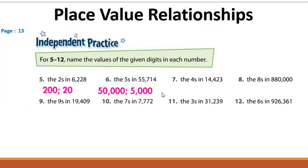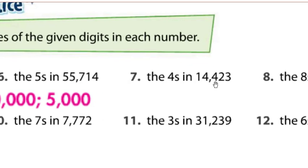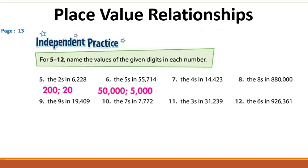For question seven, Ali Saleh answered: the first four has a value of 4,000 and the second four has a value of 400.